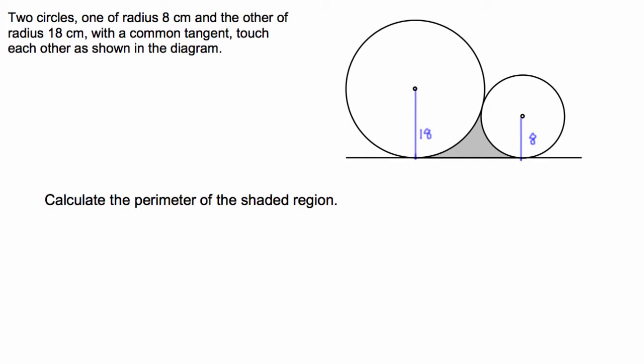We can also draw a line between the centres of the two circles. It says that they touch at a common tangent. So let's do that. So now we have a trapezium.